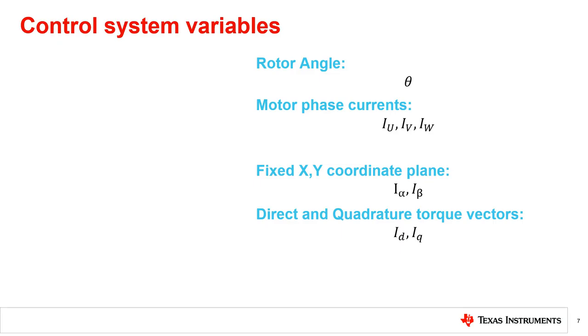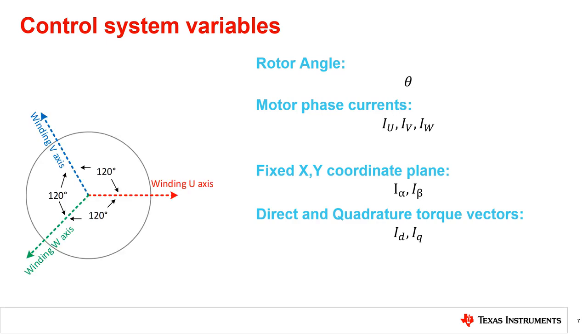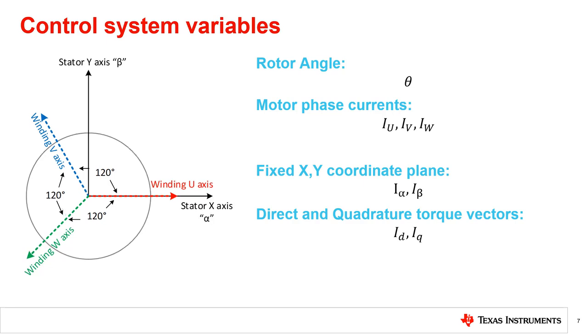Now that we've defined the goal of FOC as maximizing the torque vector perpendicular to the rotor, we should introduce the variables in the control system. Recall our motor phase currents U, V, and W, which are separated by 120-degree phase angles in a three-phase system. We define a new XY fixed coordinate system that will be referred to as alpha and beta.